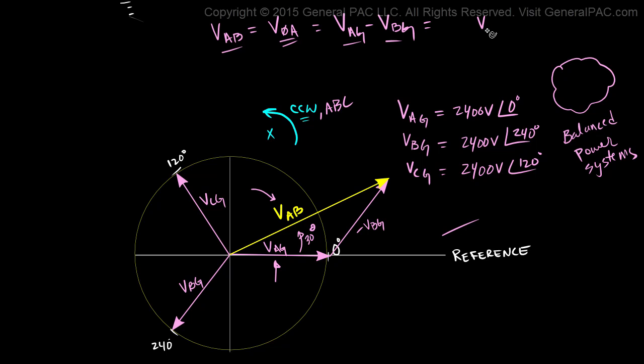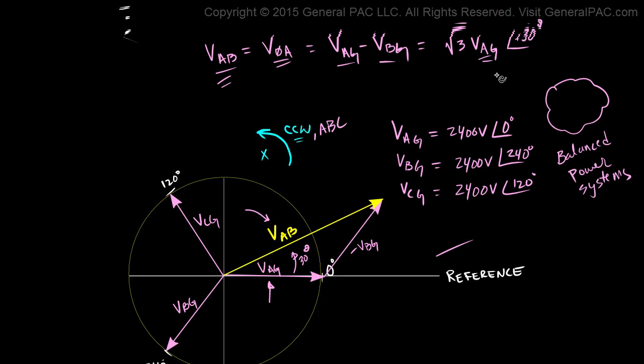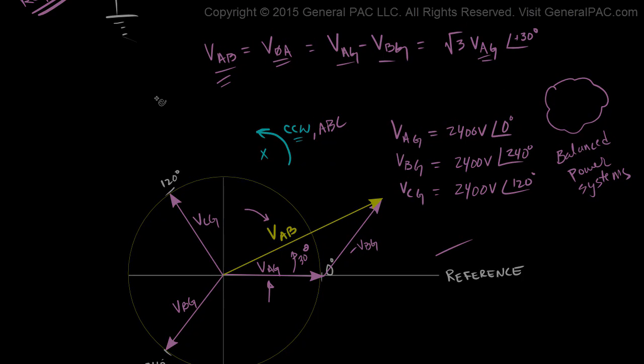We take Vag, shift it by 30 degrees in the counter-clockwise direction, and then multiply it or stretch it by 1.73 so that it overlaps Vab. Which means that Vab is equal to the square root of 3 times Vag rotated by 30 degrees. This equation here, you see that?